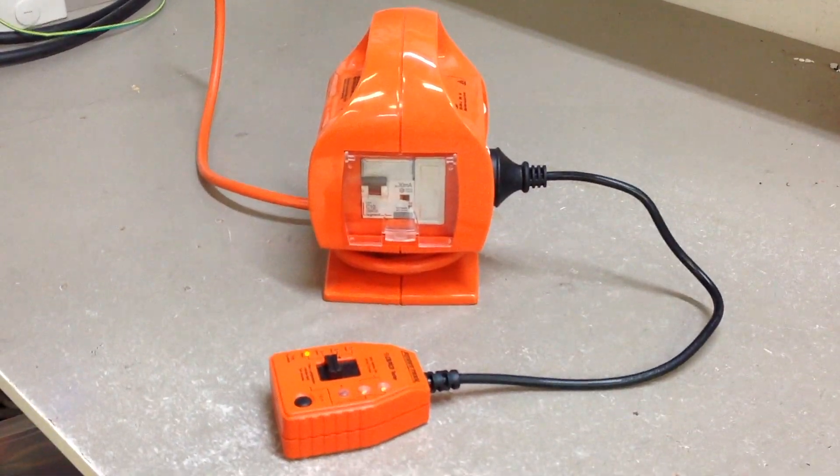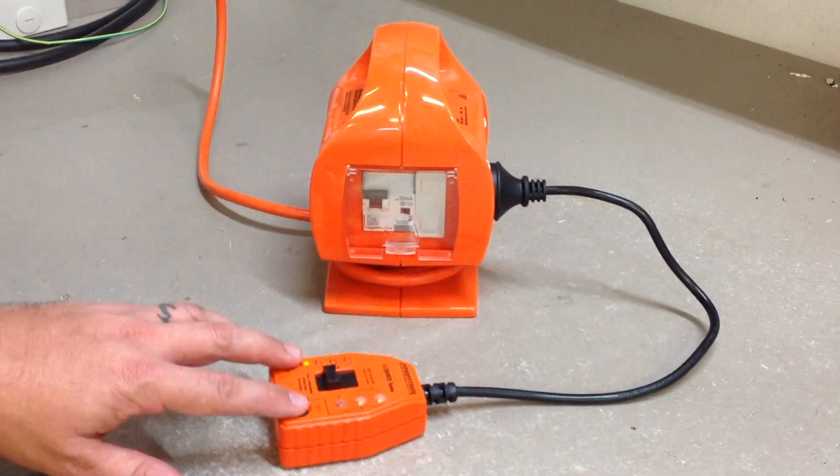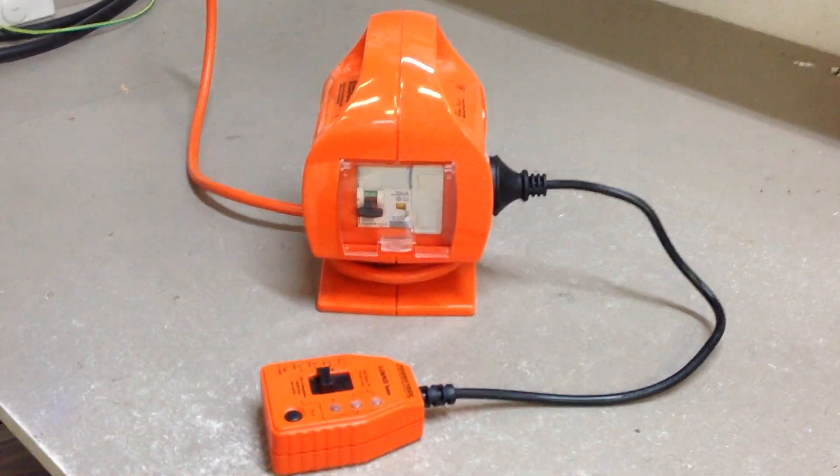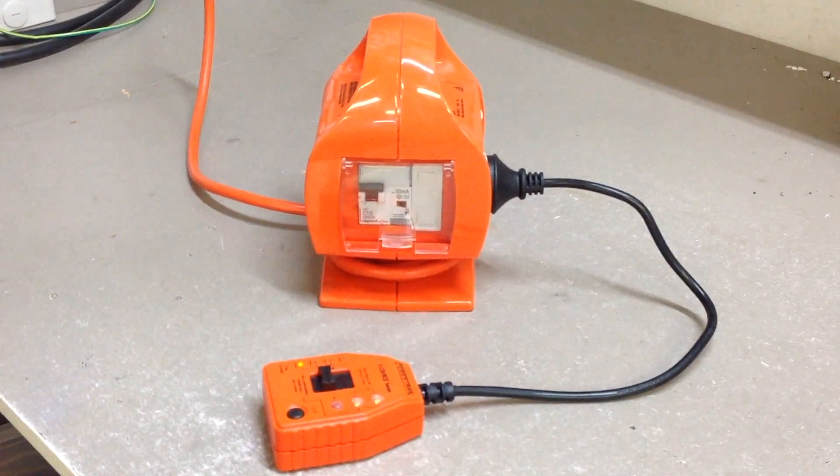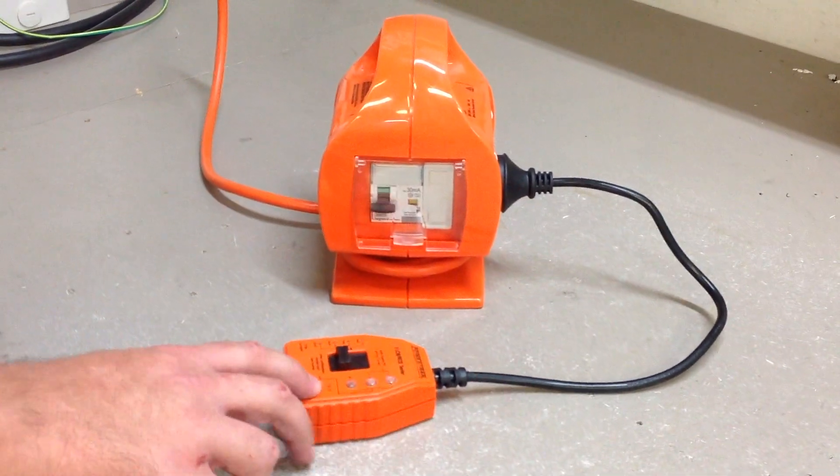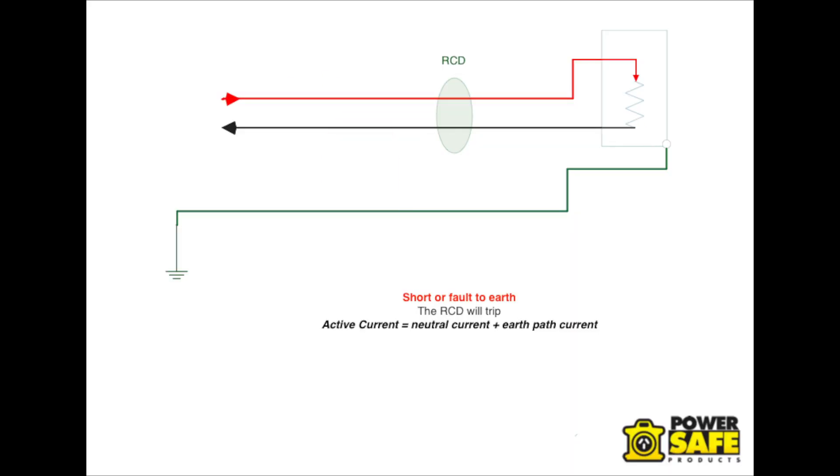If we connect the power board fitted with the RCD to a MEN or a common mains outlet and use the RCD, the RCD will trip as there is an earth path and the current flow in the active wire will have more current than the neutral wire as some current is flowing down the earth path. The RCD will trip as it will see this imbalance.